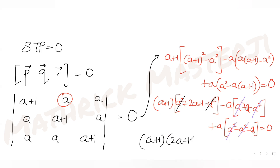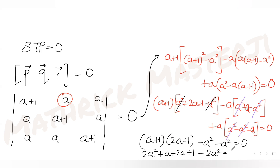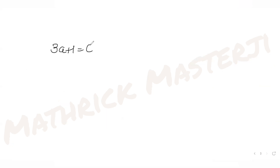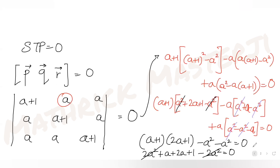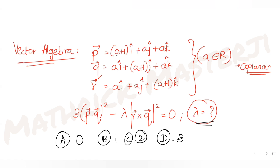After all the a² cancellations, we get (a+1)(2a+1) − a·a − a·a = 0, which simplifies to 2a² + a + 2a + 1 − 2a² = 0, giving 3a + 1 = 0. So 3a = −1, meaning a = −1/3.